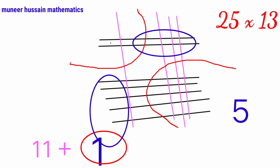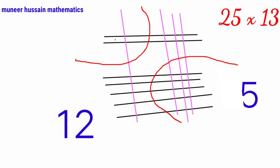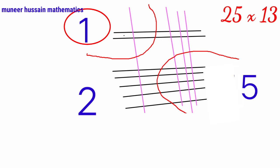Now we shall count the point of intersection of top right and bottom left. These are 11, 1 carry, it will be 12. We shall write 2 and take 1 carry.